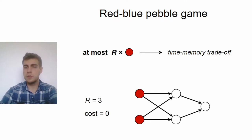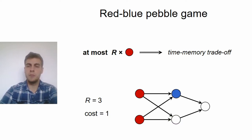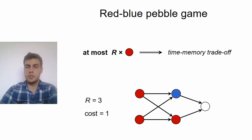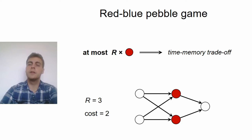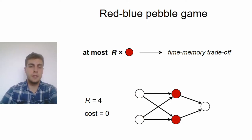So, for example, if we have r equals three, three units of fast memory, then we can compute this upper node, but then, when we want to compute this lower node, we don't have any more red pebbles left. So, we need to transfer the upper node to slow memory, place a blue pebble on it at the cost of one, and only then can we compute this lower node. And after this point, we can just delete the input values, because they are not needed anymore, and then we need to bring this upper node back from slow memory at another cost of one, and then we can finish the computation with a total cost of two. Whereas, if we had r equals four, then we can just compute both nodes, because it all fits into fast memory, then delete the inputs, and finish the computation without having any cost at all.